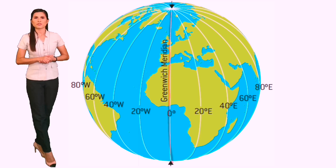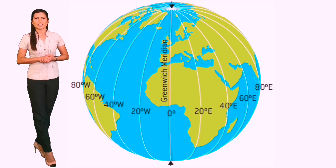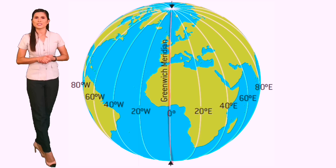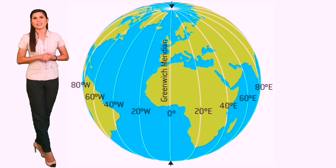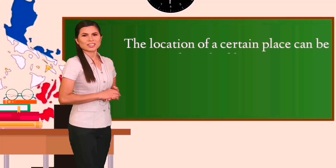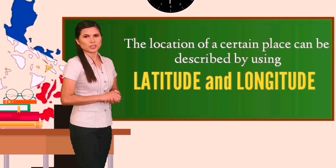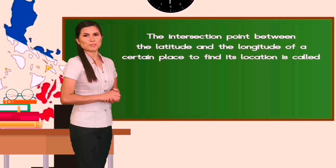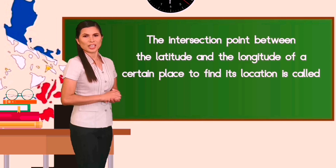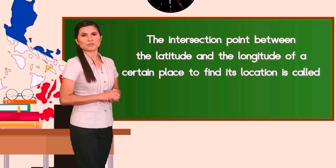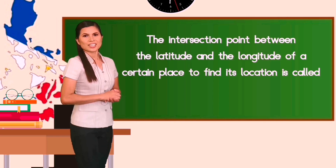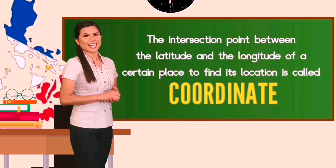The prime meridian is the primary line in determining the longitude, and the basis for understanding whether a certain place is found in the eastern hemisphere or western hemisphere. The location of a certain place can be described using latitude and longitude.